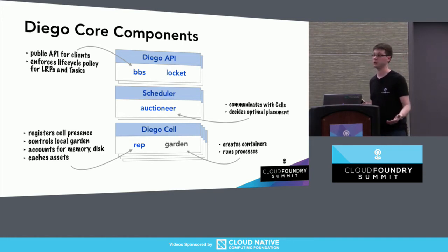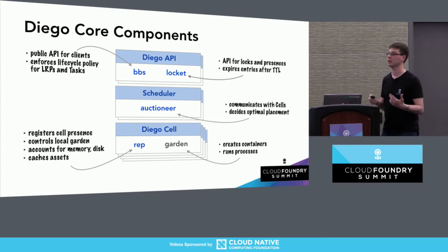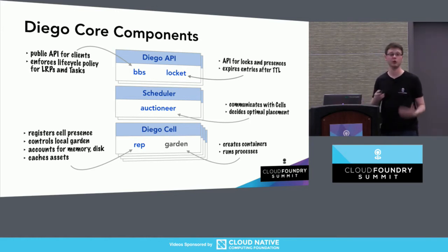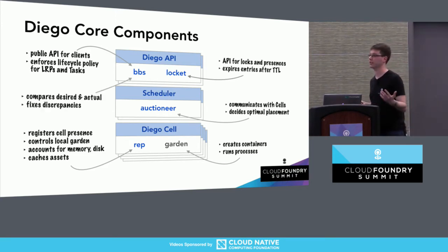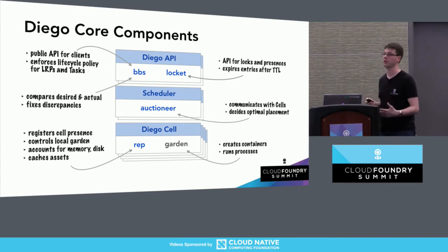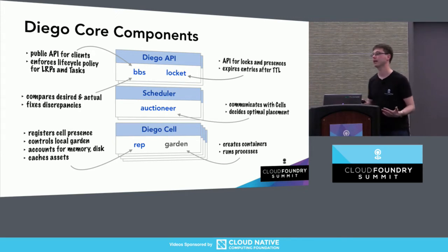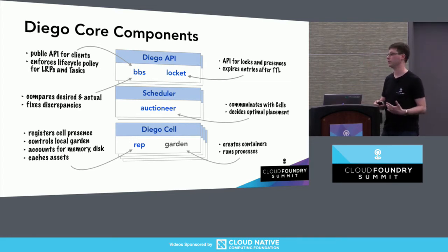I also mentioned the locket component we've been introducing. It coordinates distributed locks and cell presences that the rest of the control plane needs to find active instances of these services. For the BBS and the auctioneer, only one instance is active at a time, and locket helps coordinate that. The BBS also has another crucial responsibility: periodically assessing the desired state that clients like Cloud Controller have expressed, and the actual state from all Diego cells, reconciling any differences. If there are extra instances that shouldn't be running, it stops them; if there are missing ones, it resubmits them for placement.